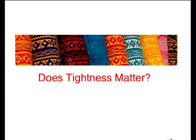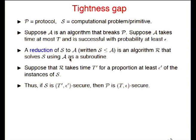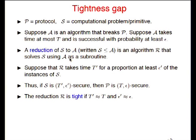The first part of my talk will be analyzing tightness. This is an area well known to everyone who works in protocols, but for the most part the issue is sort of swept under the rug. We want to prove a protocol secure with respect to a primitive S. Assume there's an algorithm A which T,ε-breaks the protocol — running in time T with success probability at least ε. The reduction R uses A as a subroutine and solves problem S in time T′ with probability at least ε′. The proof is tight if T′ ≈ T and ε′ ≈ ε.